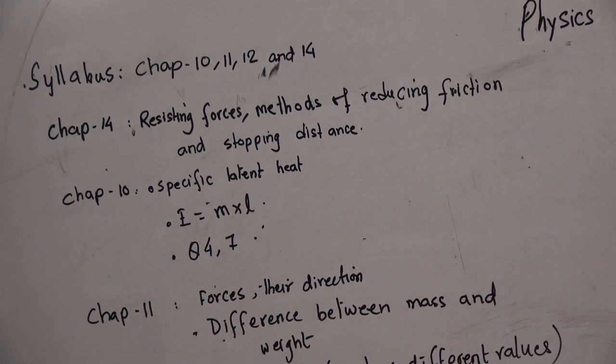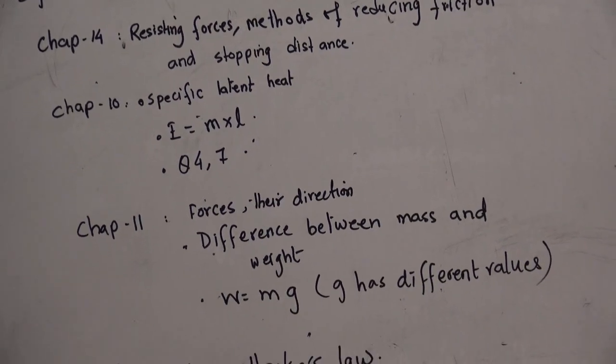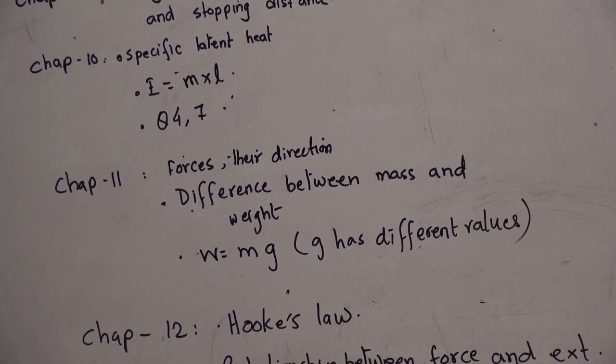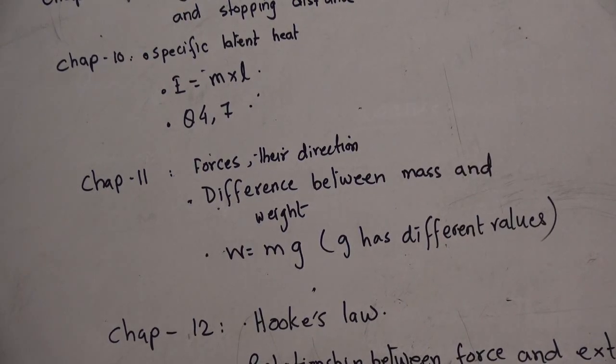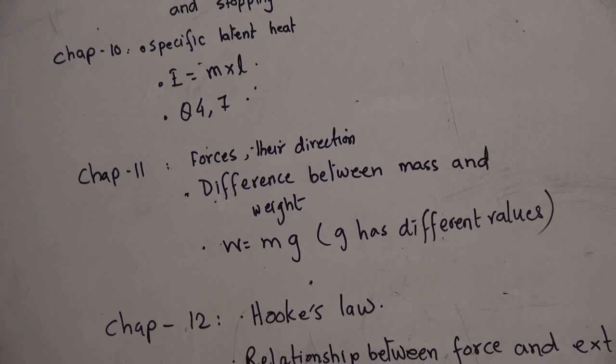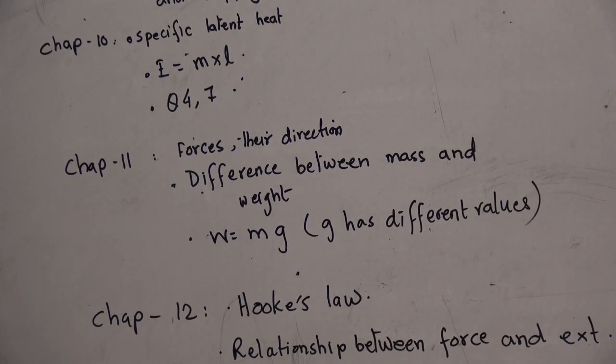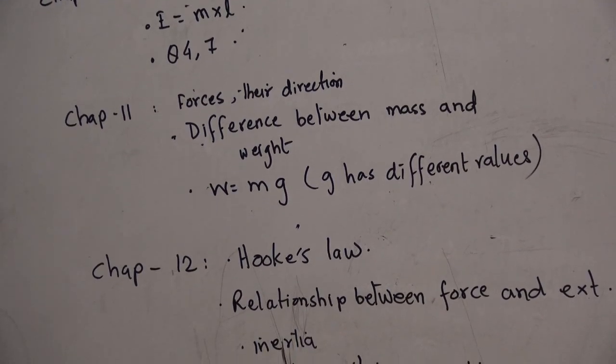From chapter 11, you have to learn the forces, their directions, difference between mass and weight. And you have to use the formula w equals to mg to find the weight. Weight varies from place to place, you know it. Therefore, g will have a different value on moon and earth. We have done this sums in the class for moon and earth, so you just practice those.